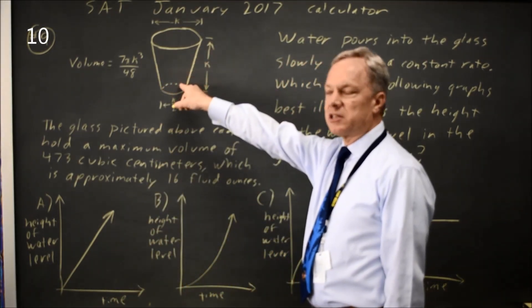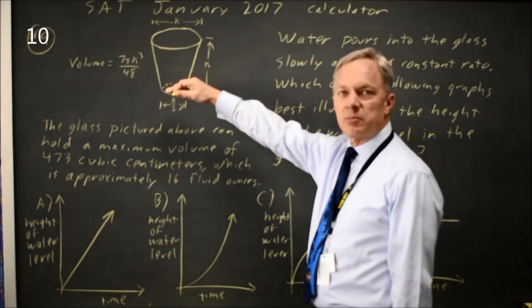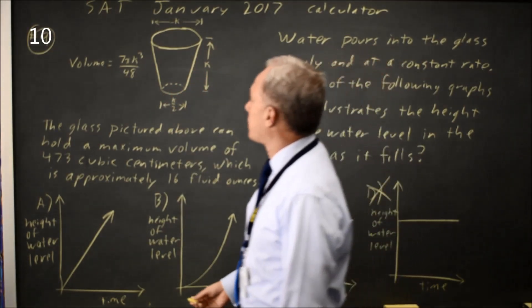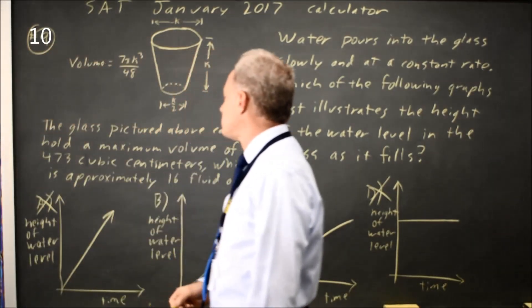But this is not a right circular cylinder, it's a cone. As the water level goes up, the area gets wider, and so the rate of filling, the rate at which the height increases, should be changing.